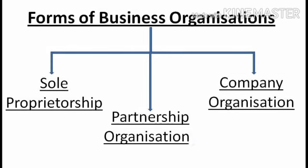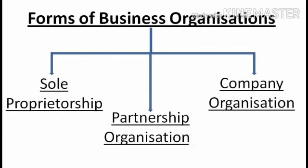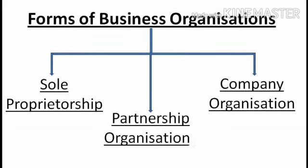Dear students, you have heard about the various forms of business organization, like sole proprietorship, partnership organization, joint Hindu family, cooperative society, and company organization. But as per Class 12th standard, you have the knowledge of three important business organizations: sole proprietorship, partnership organization, and company organization.